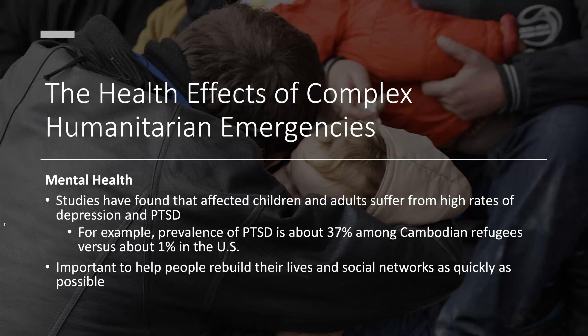Studies have found that affected children and adults suffer from high rates of depression and PTSD. For example, the prevalence of PTSD is about 37% among Cambodian refugees versus about 1% in the U.S. It is important to help people rebuild their lives and social networks as quickly as possible.